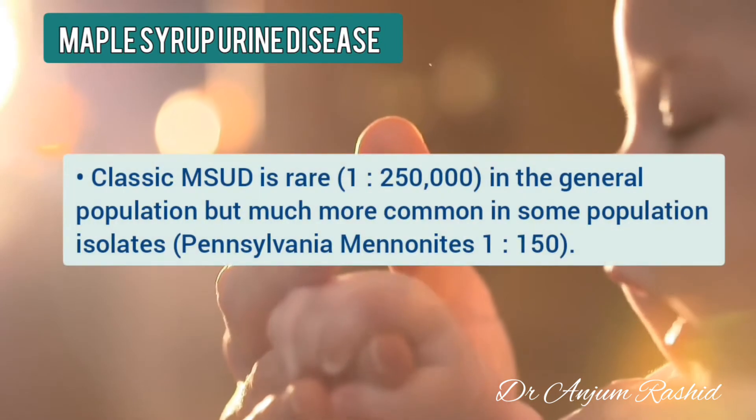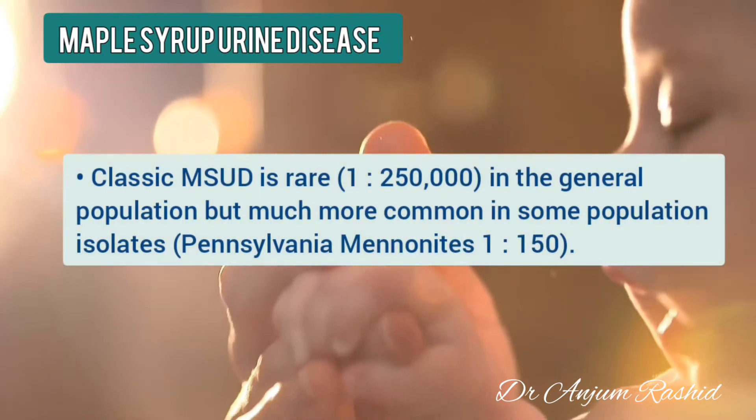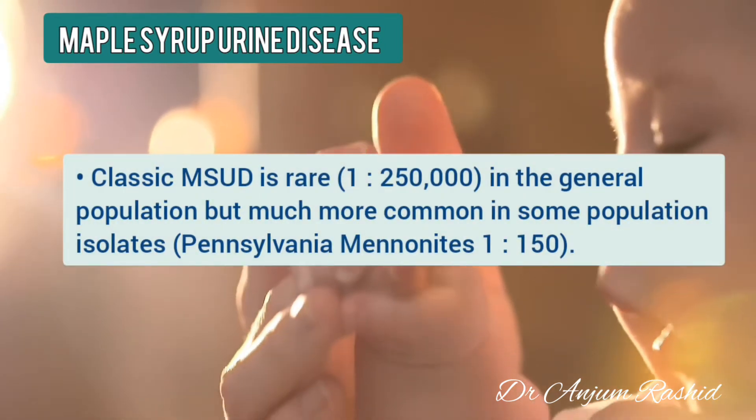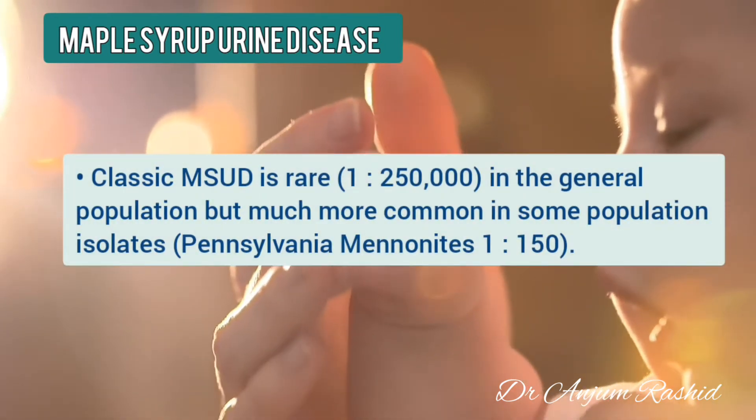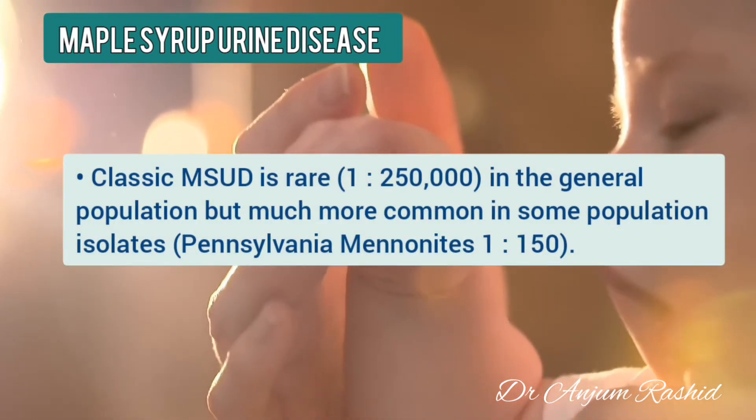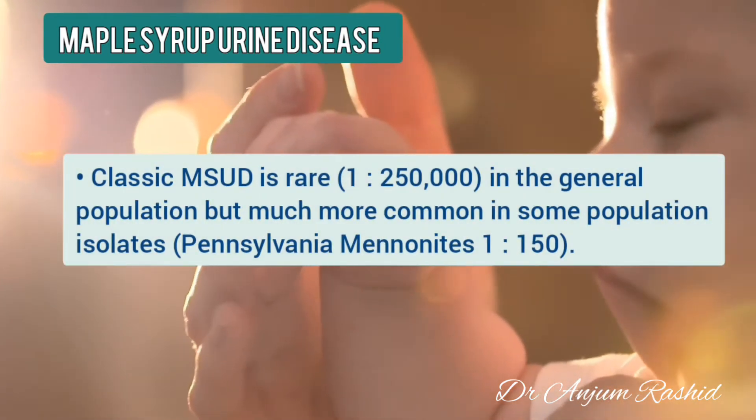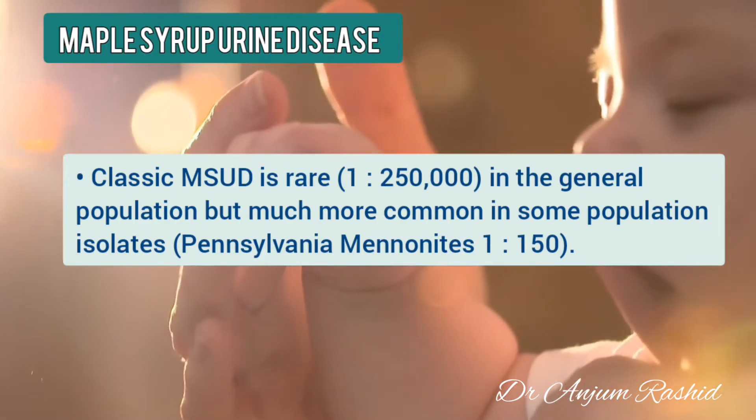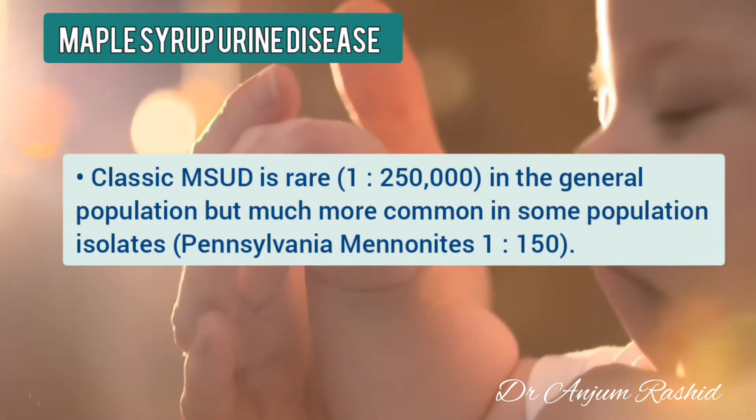Classic maple syrup urine disease is rare in the general population but much more common in some population isolates such as Pennsylvania Mennonites.